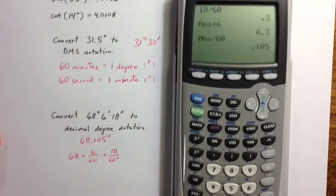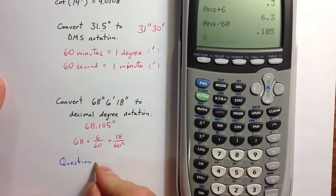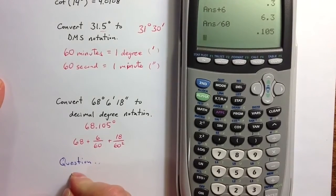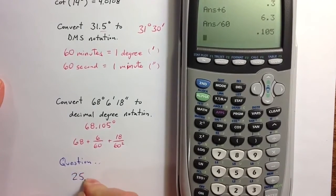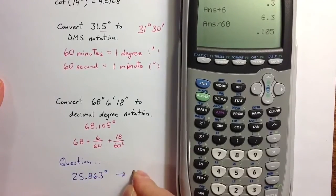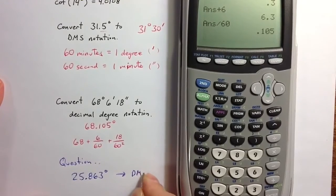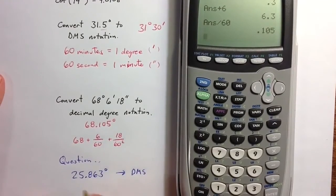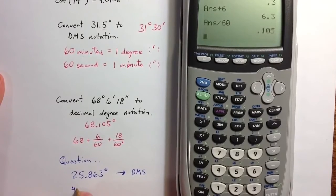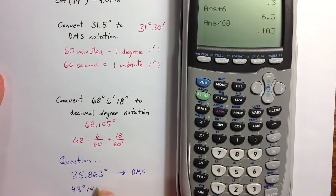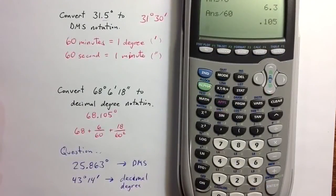Let me end with a quick question. Take a moment from what you've just seen in the video and try to turn 25.863 degrees into DMS notation, and try to turn 43 degrees and 14 minutes into decimal degree notation. I hope you enjoyed the video. Thanks.